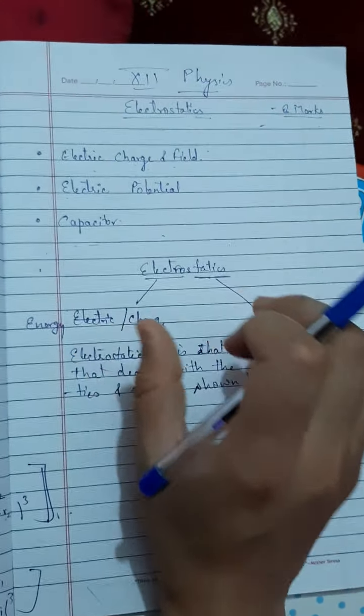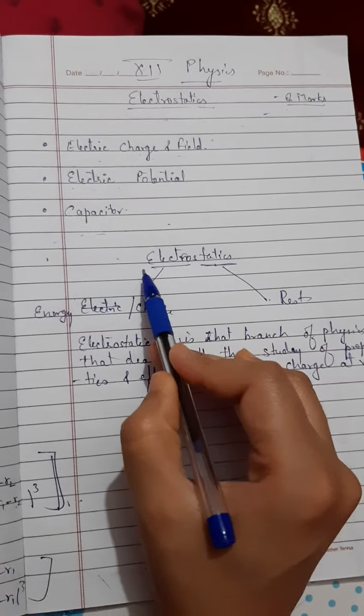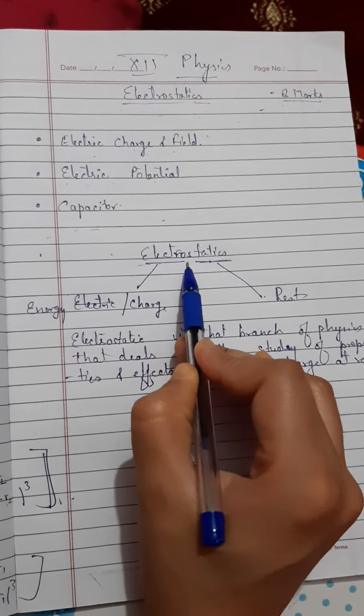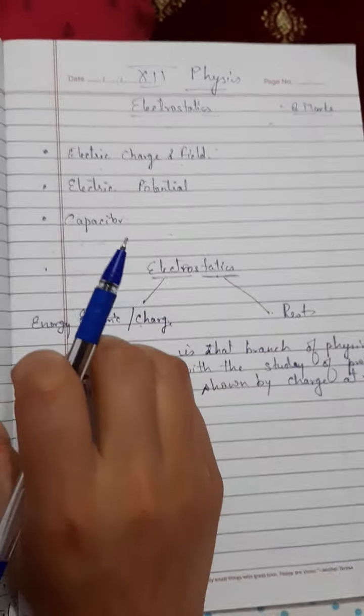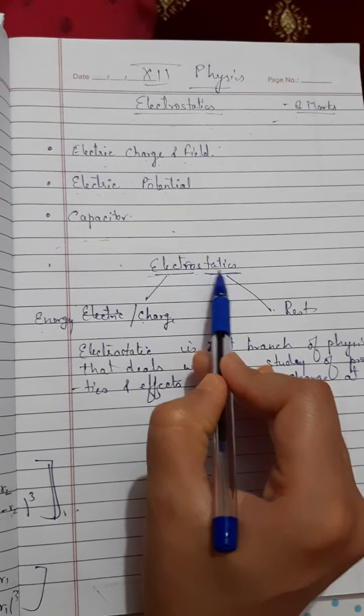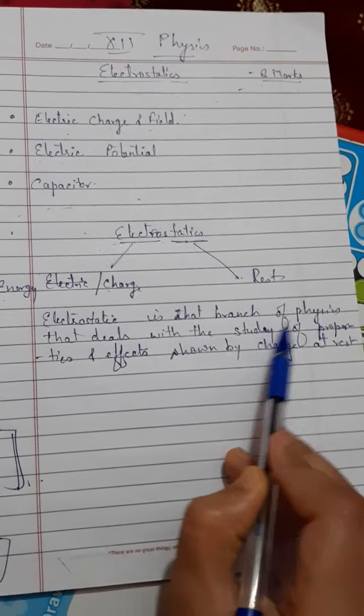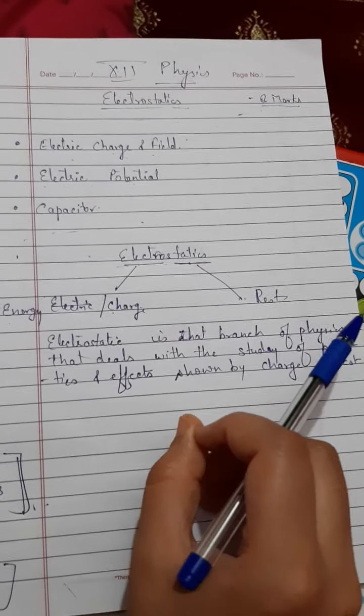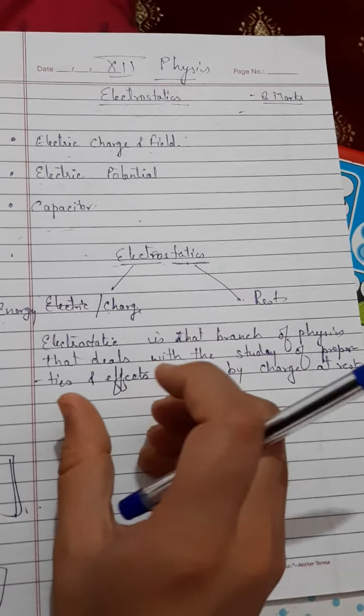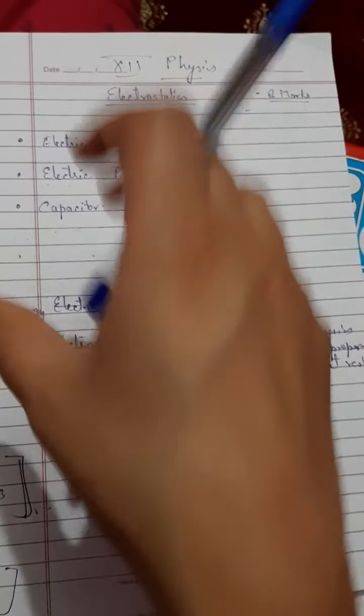Before we start that chapter, let us discuss what is electrostatics. If we divide the word electrostatics, the first part 'electro' stands for energy or charge, and 'statics' means rest. So the definition is: Electrostatics is a branch of physics that deals with the study of properties and effects shown by charges at rest. When charges are at rest position, whatever properties or effects they show, the branch where we study all these things is called electrostatics.